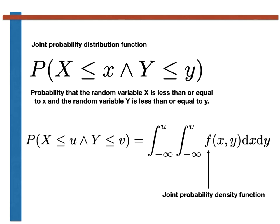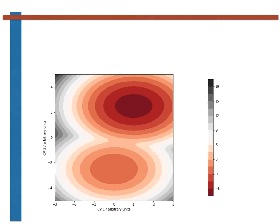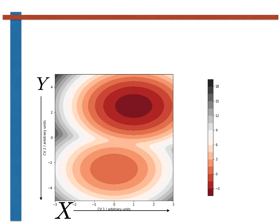The joint probability mass function was best illustrated by putting its various elements in a table. By a similar measure, the joint probability density function is best illustrated by drawing a two-dimensional contour plot as shown here. The various values of X are shown on the x-axis and the various values of Y are shown on the y-axis. The colour is then used to display the value of the probability density function or, in the case of the particular graph shown here, the value of the negative logarithm of the probability density function. Displaying the logarithm of the probability density on such plots rather than the probability density itself is commonplace, as the probability density will often vary over multiple orders of magnitude.